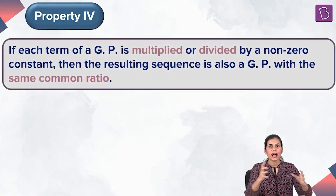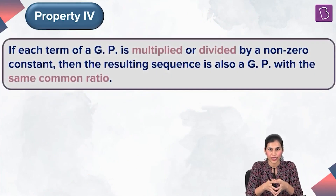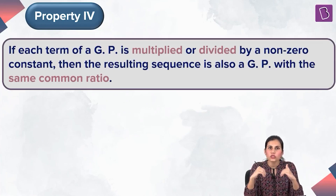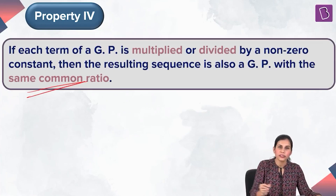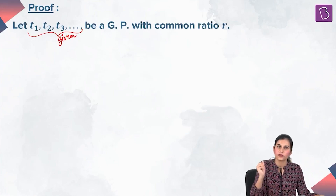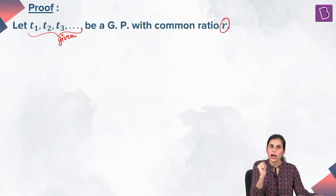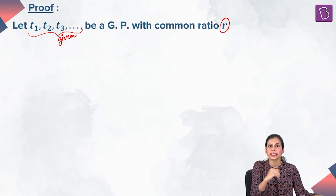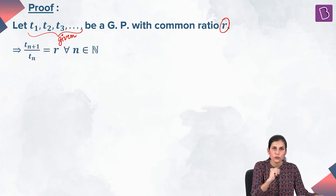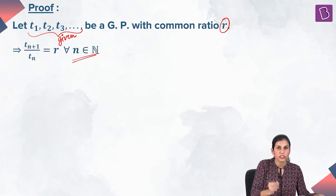The next property says that if you have a GP and you multiply or divide each of its terms by a non-zero real constant, then the resulting sequence will also be a GP with the same common ratio. Let's prove this. Suppose this is the GP with common ratio R, meaning the ratio of each successive term equals R — that is, the (N+1)-th term divided by the N-th term equals R for every N in the natural numbers.